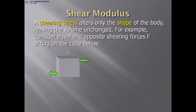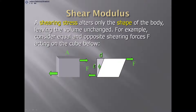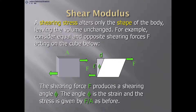Shear modulus: a shearing stress alters only the shape of a body, leaving the volume unchanged. Consider equal and opposite shearing forces F acting on a cube. Shear force acts parallel to the cross-sectional area. The shear stress develops, producing a shear strain represented by angle φ, where tan φ = D/L.